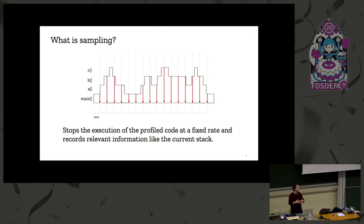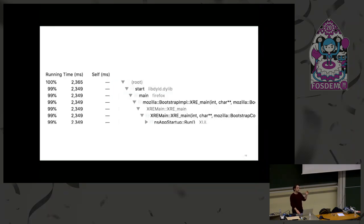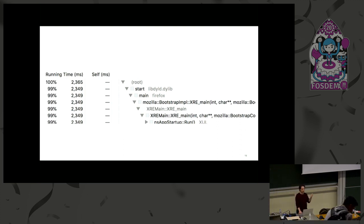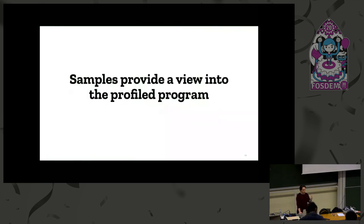Once we have that sampled data, we aggregate it and create something like a call tree. This is an example from Firefox — there's a main function, and from main there are other calls. We sample every millisecond, aggregate that data, and also create timings from that aggregated data. I'll talk about the timing later.